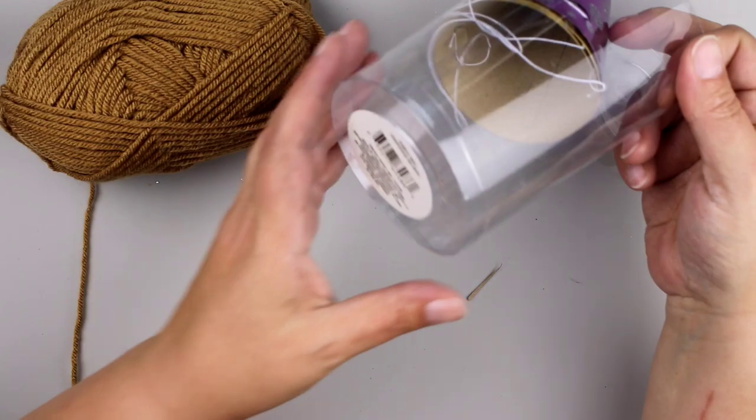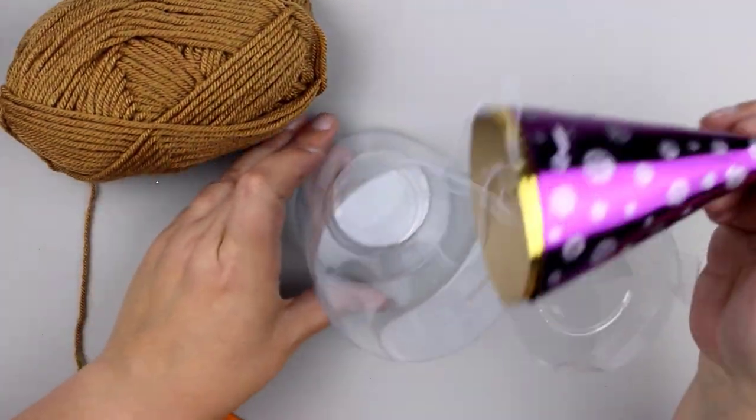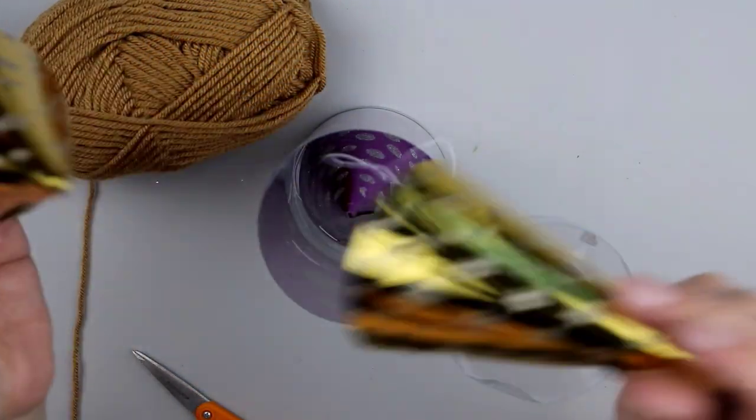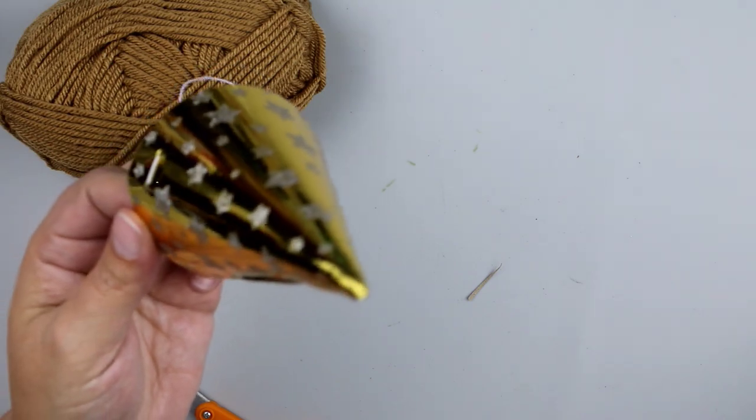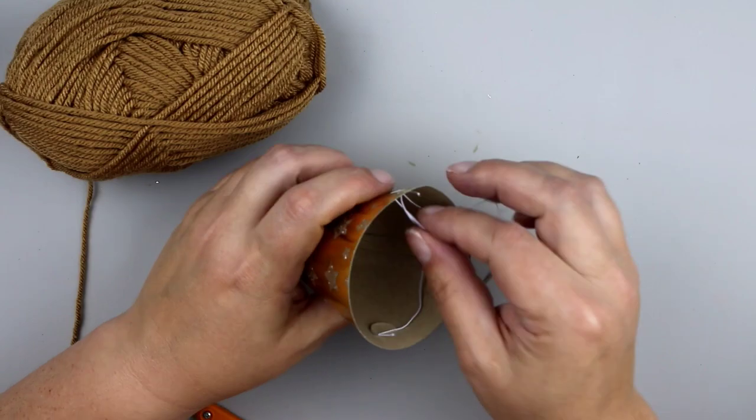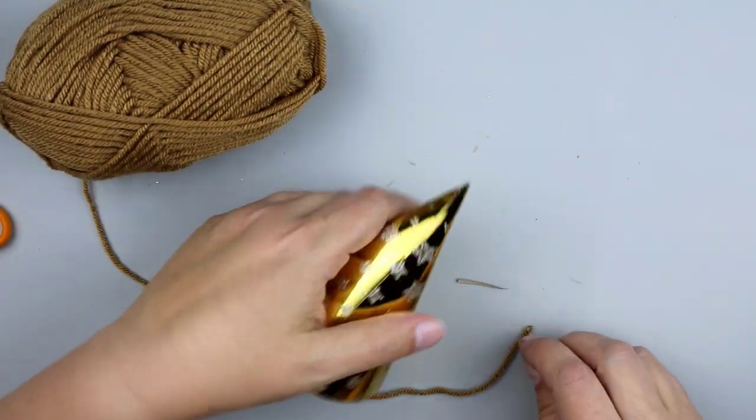To get started with our first DIY, we're going to use some of these mini party hats. You can find these in the party section at the Dollar Tree. I'm just going to grab out a color. It doesn't really matter which color you choose. But we're going to take off that elastic band at the chin strap. So we'll just take that off and you can discard that or use it for another project.